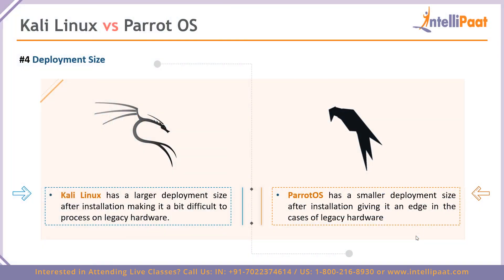Coming to point number four, it's the deployment size. Kali Linux, even after installation, will have a larger deployment size. This puts a lot of strain if you are working on legacy hardware, a mobile platform, or if your requirements are small — making it very hard to set up and scale. Parrot OS has a comparatively smaller deployment size, giving you the advantage of working well with legacy hardware, mobile platforms, while maintaining good efficiency and speed.